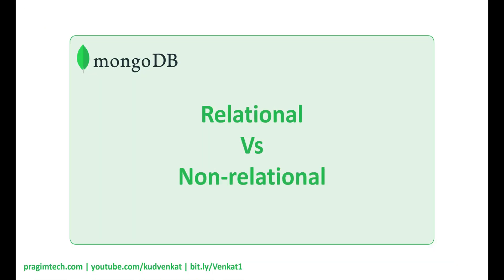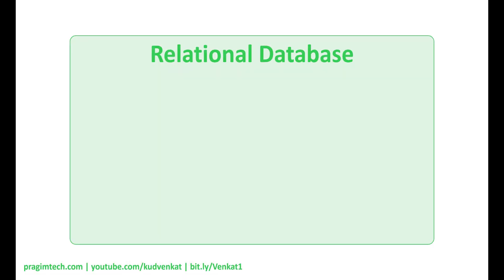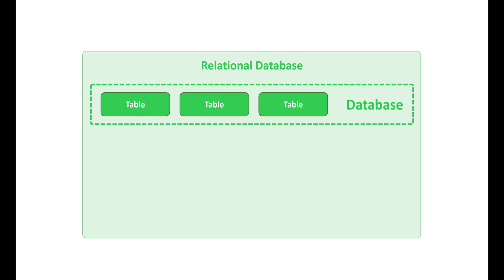First, let's understand the difference between a relational and a non-relational database. In a relational database like SQL Server or Oracle, a database is a collection of tables — it contains one or more tables and it is these tables that store data. Simply put, a relational database is a collection of one or more tables.